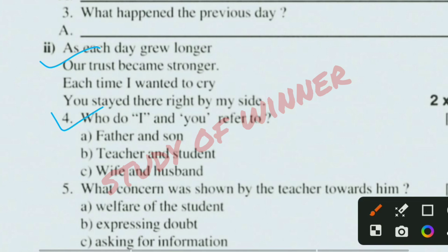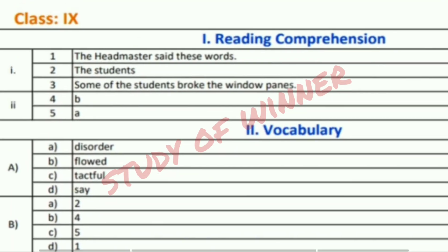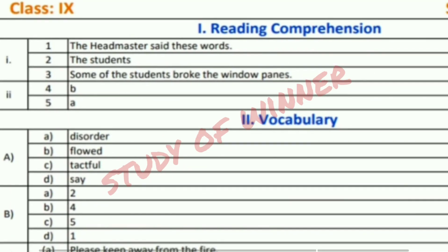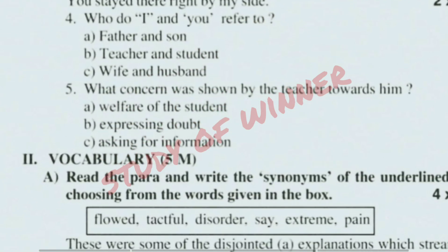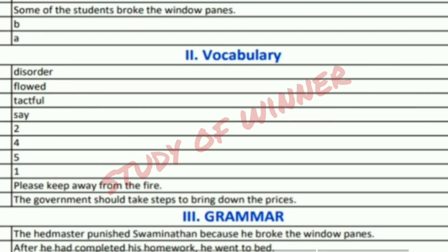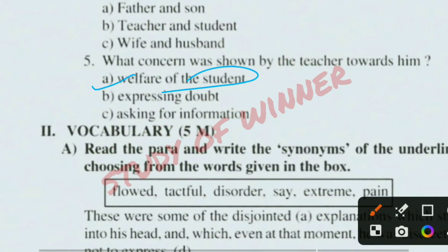The fourth question asks: who do 'I' and 'you' refer to? The answer is B and A — B means teacher and A means student. The fifth question's right answer is A, meaning welfare of the student.